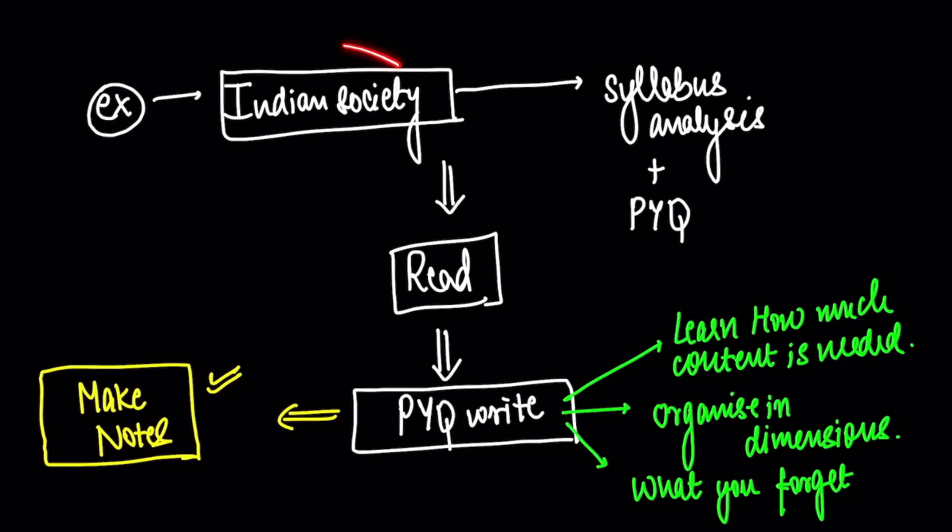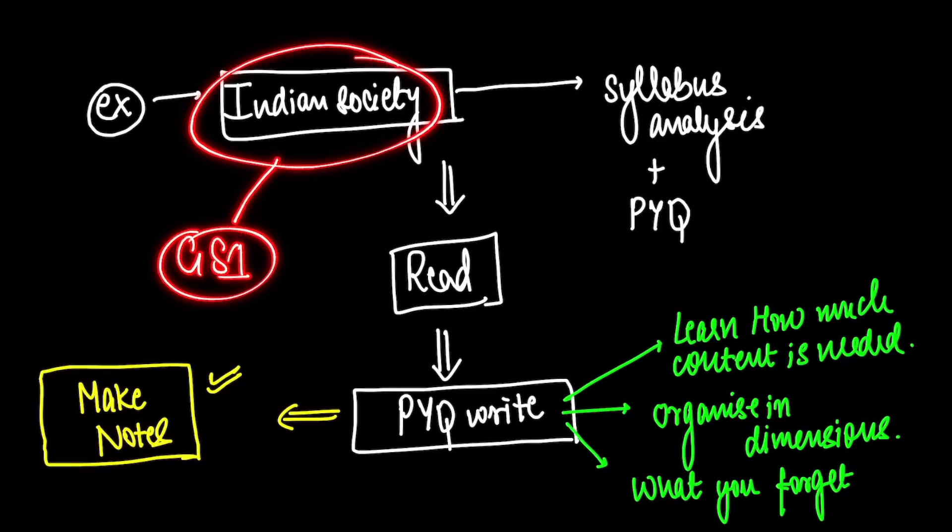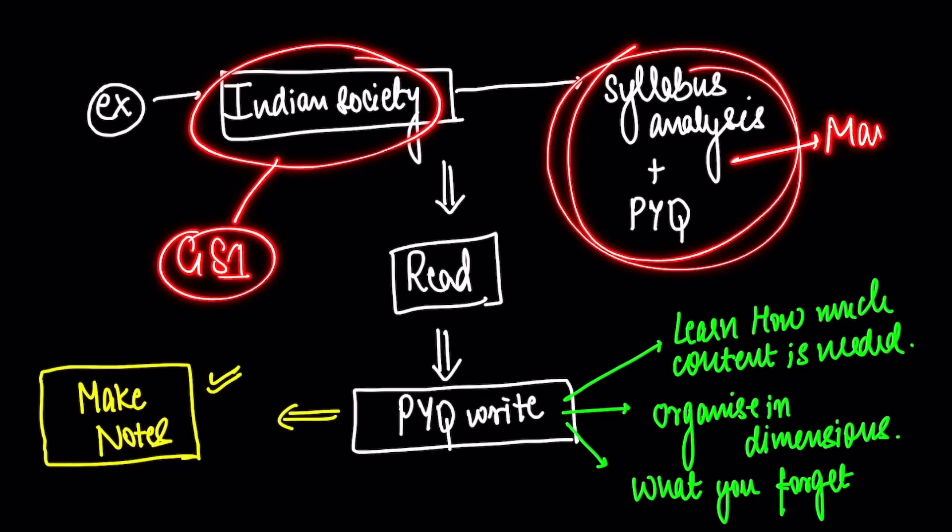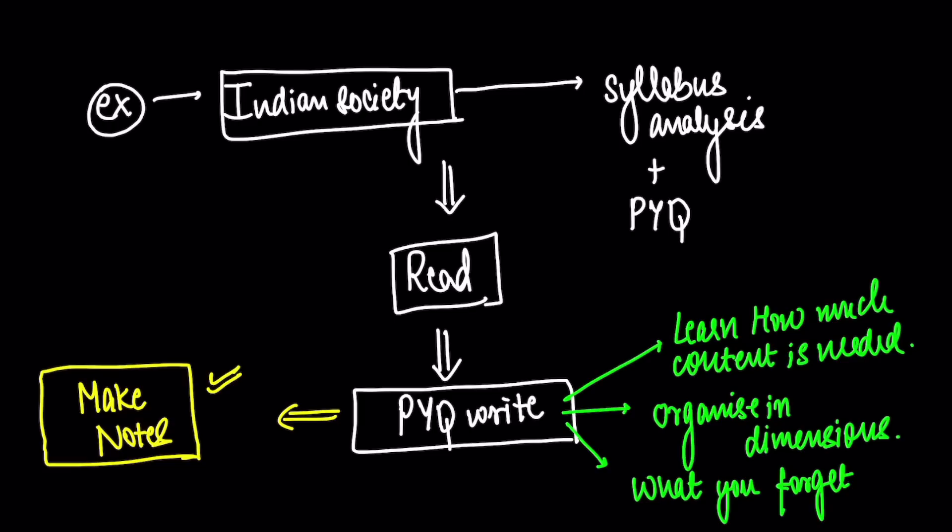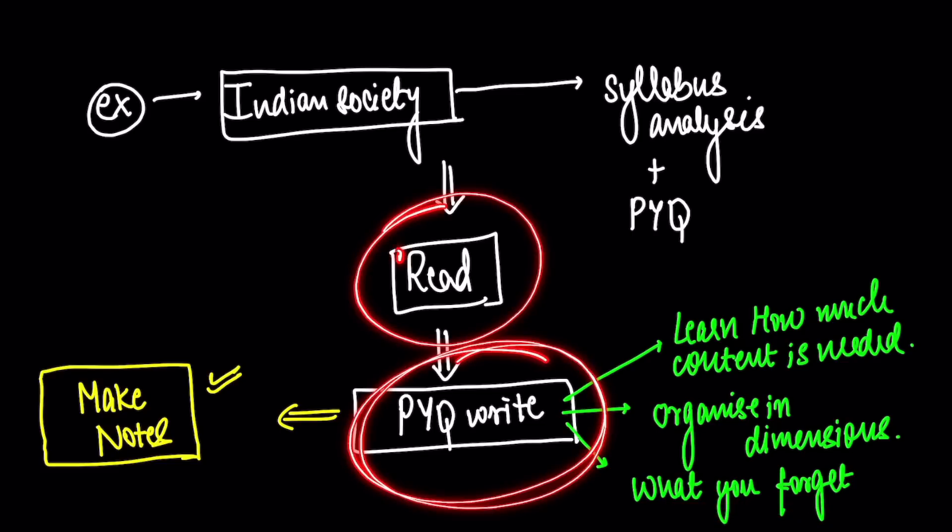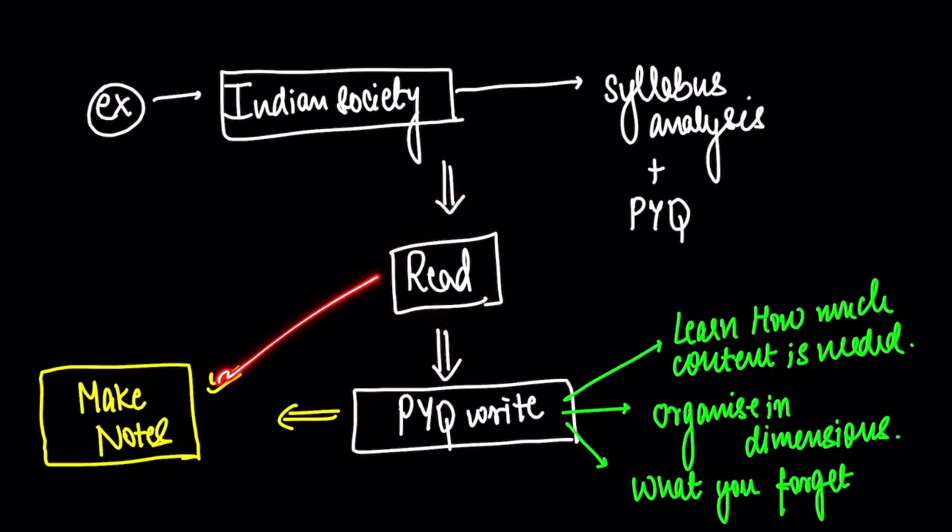Now, let's say for example you start studying Indian society, which comes in GS Paper 1 in mains. First, what will you do? Syllabus analysis and previous year questions. The video I made on how to make mains notes - that video is in the description. From that, you will get an idea of how this thing is done. After this, don't make notes. After this, you read from any one source. We will talk about what that source is. In this case, you can follow my notes, which I have scanned and uploaded on my Telegram. So once you read from a source, you write the previous year questions. From this, you will learn how much content is needed. You will be able to organize it in various dimensions, and you will also realize whatever you forget - what things you forget quickly. Once you have done this reading and writing, you will get knowledge from this. From this, you will understand how your structuring should be. Then you make notes for Indian society. Then your notes will be complete. From this, you will also understand dimensions.